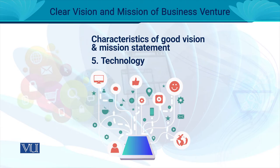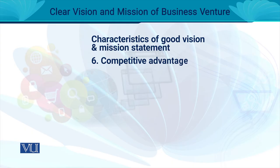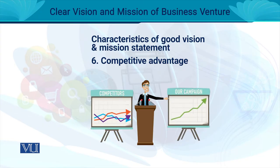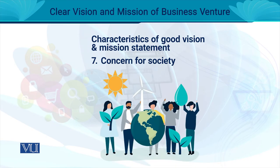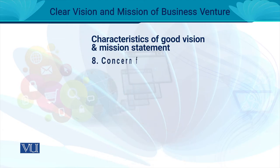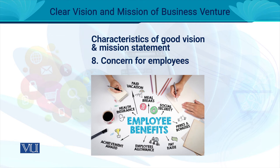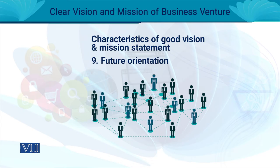Technology's reflection should also be there — especially for technology-oriented firms, the technology element is visible in their statements. Likewise, your unique selling proposition — what makes you unique — should clearly reflect in the vision and mission statement. Your concern for society, the public, and employees should all be reflected, especially your future orientation, because it is your future orientation that ensures your business growth and allows you to diversify without changing your vision and mission statement.